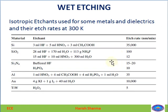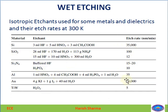There are several isotropic etchants used for metals. For silicon, HNA is used; for SiO2 a mixture of these chemicals is used. The etch rates are given in the table.